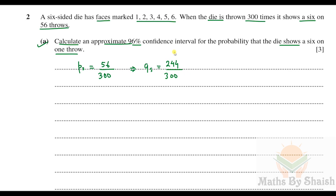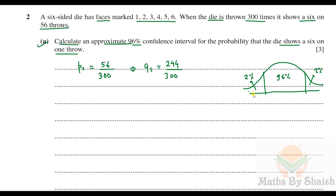For the 96% confidence interval, 4% is left in the tails — 2% in each tail. So the relevant cumulative probability is 98%, and from the standard normal distribution table the z-value is 2.054.